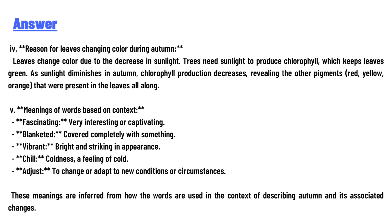Fifth, the meanings of words from context: fascinating means very interesting or captivating; blanketed means covered completely with something; vibrant means bright and striking in appearance; chill means coldness or a feeling of cold; adjust means to change or adapt to new conditions or circumstances. These meanings are inferred from how the words are used in the context of describing autumn and its associated changes.